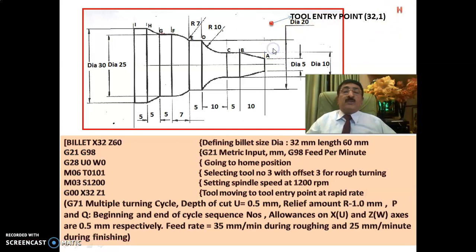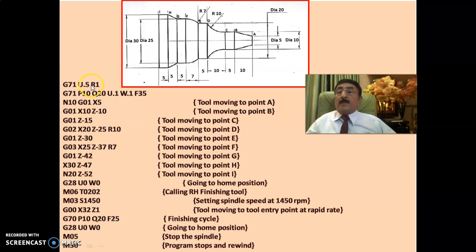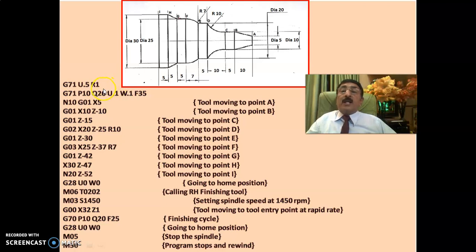Now we start the G71 rough turning cycle. G71 U0.5 R1 — here U0.5 means the cut increment is 0.5 mm, so diametrical reduction per cut is 1 mm. R1 is the retract distance: after every cut the tool moves back by 1 mm before repositioning for the next pass.